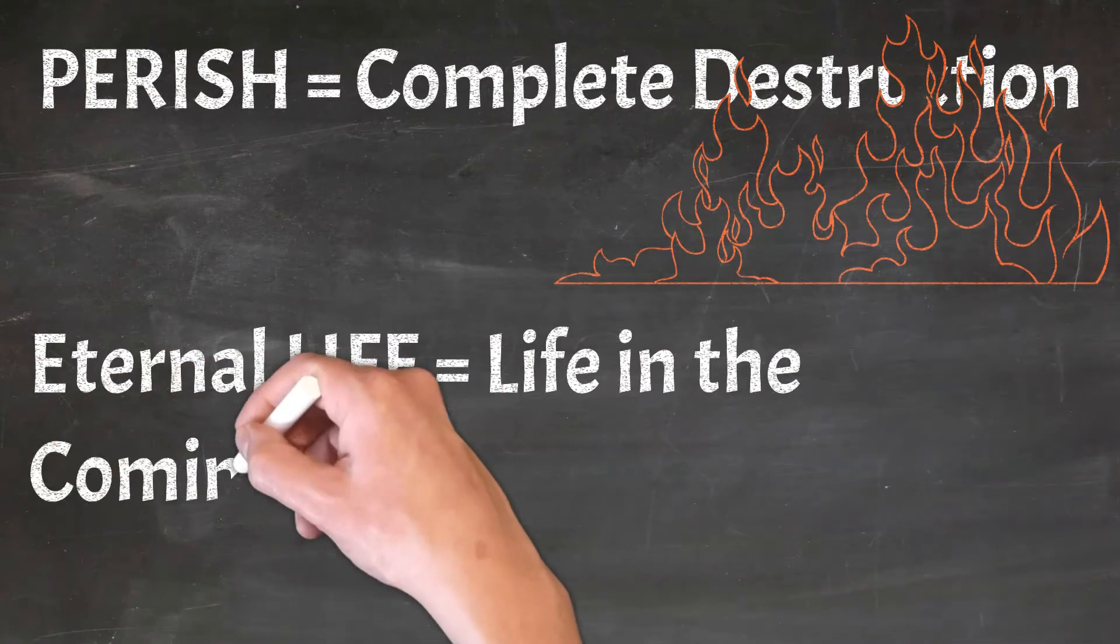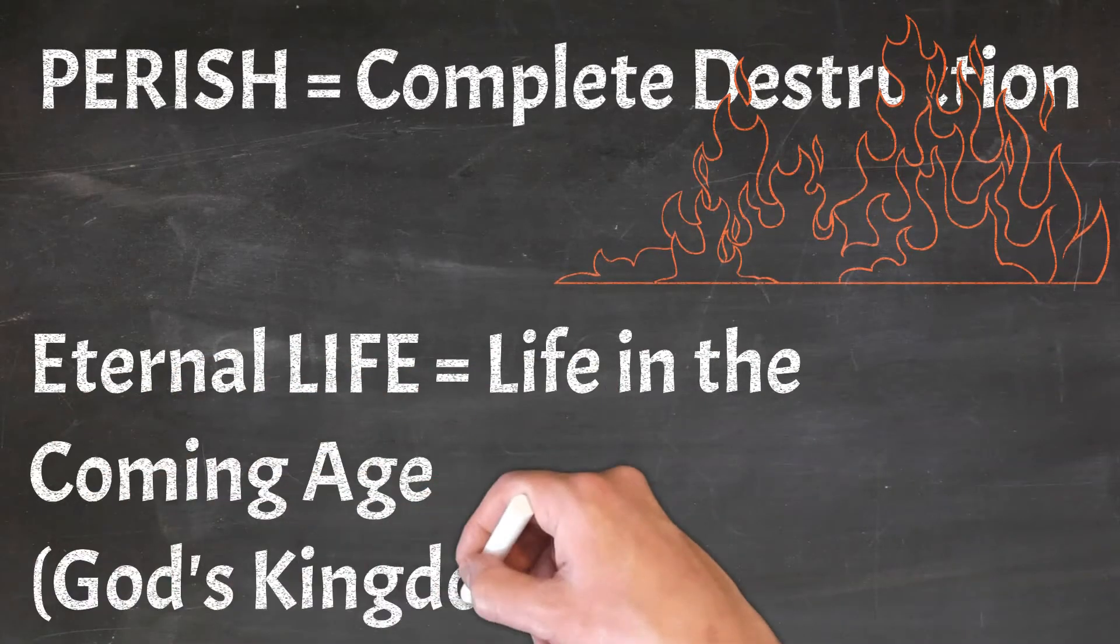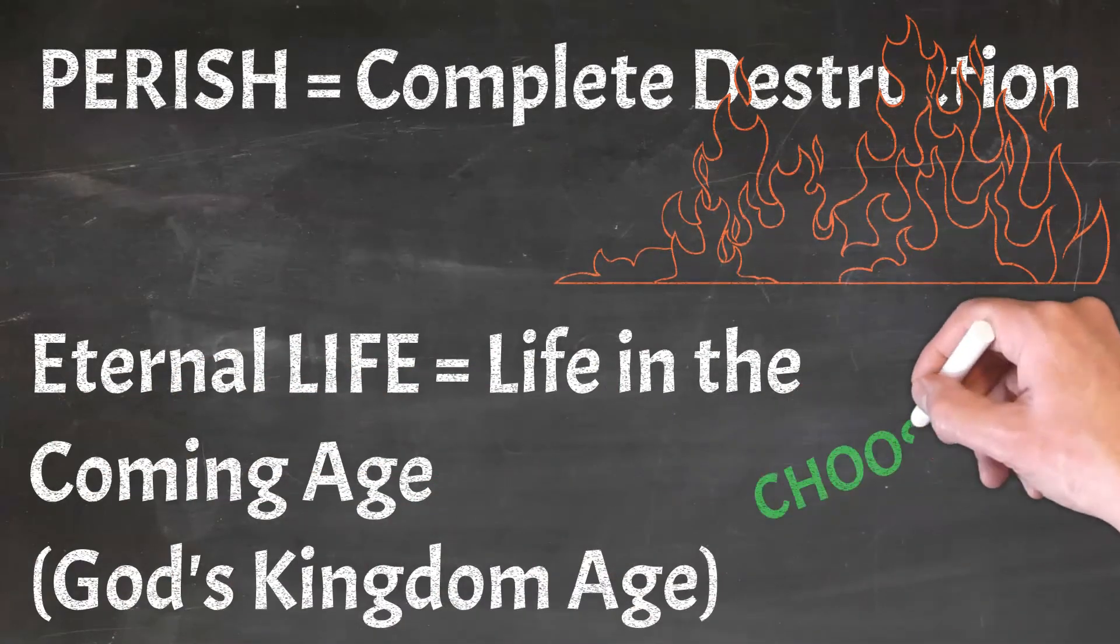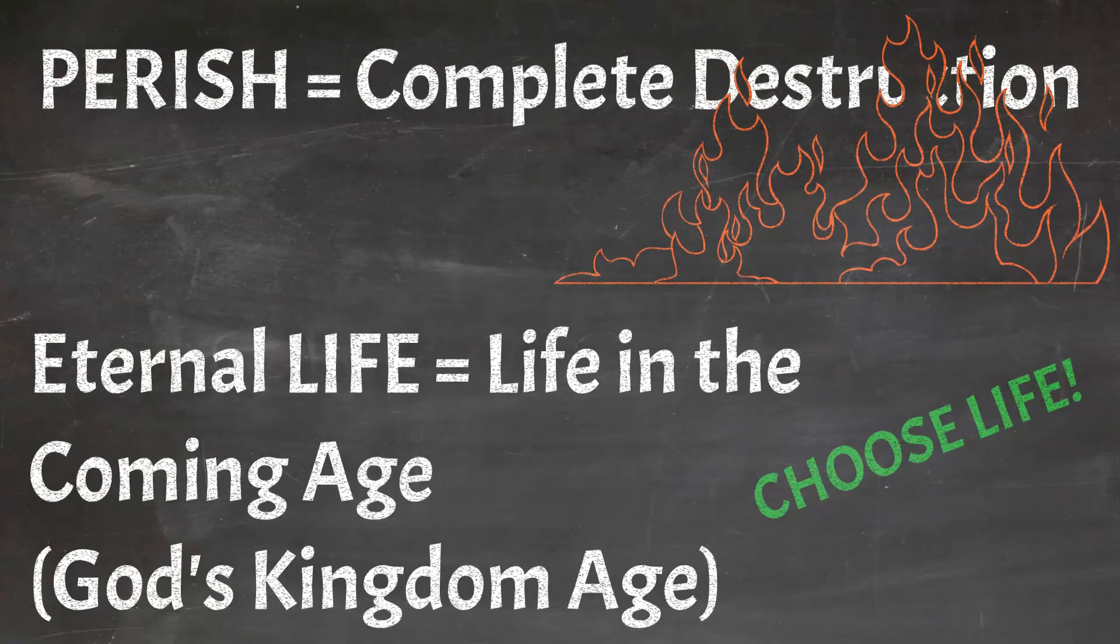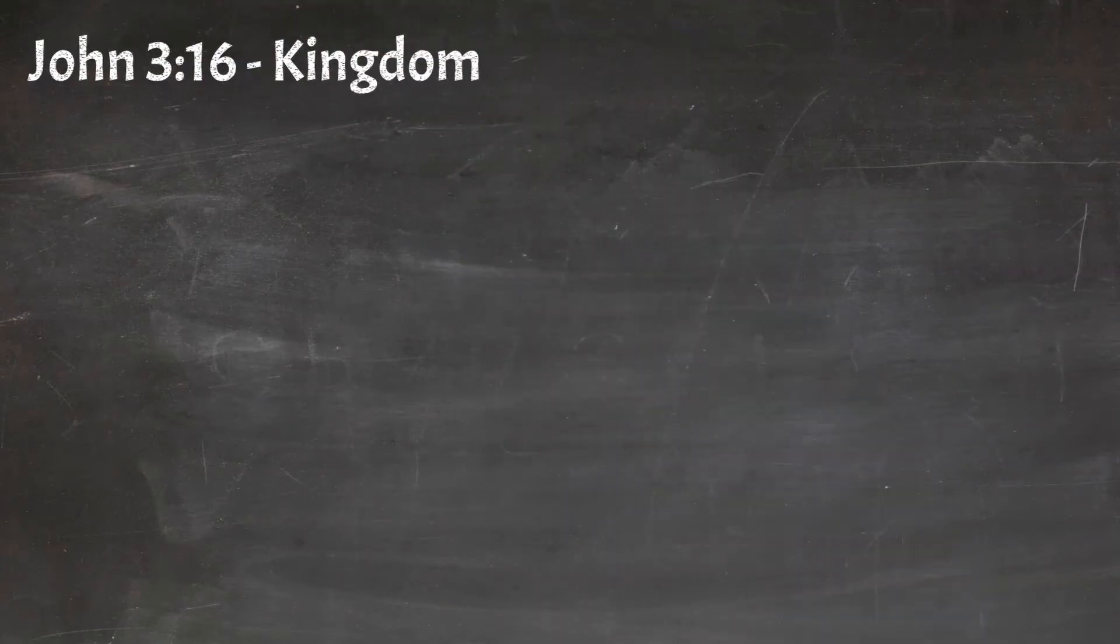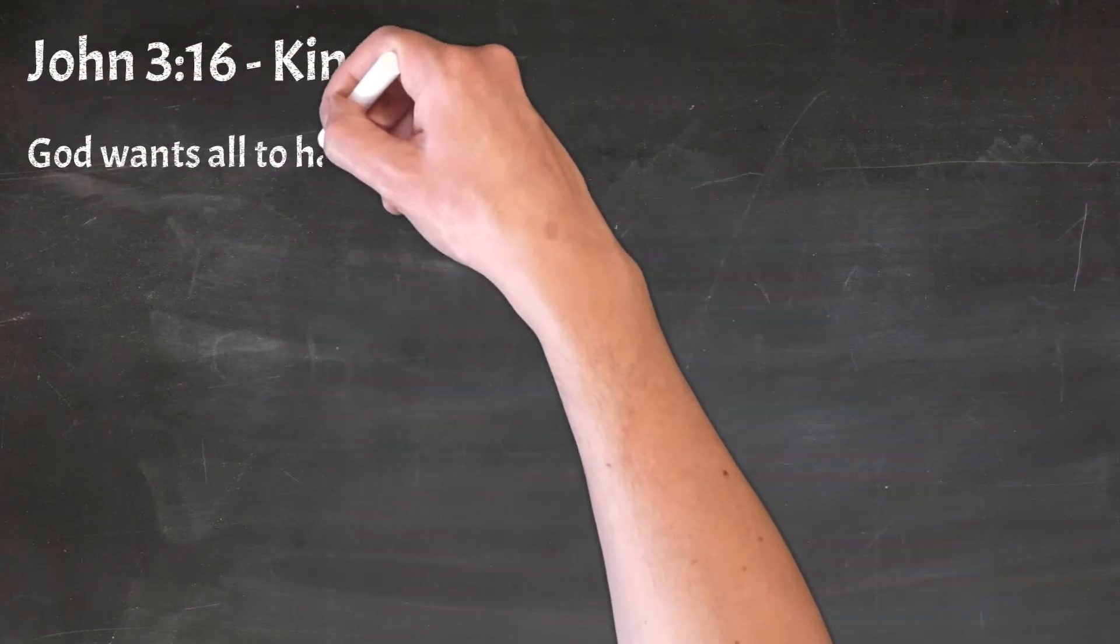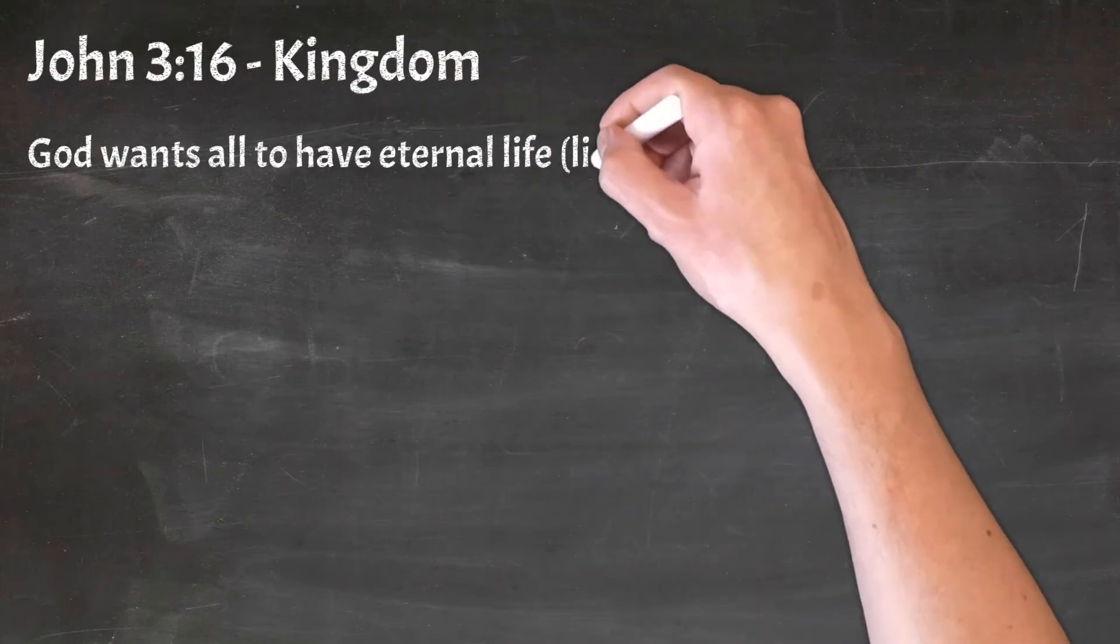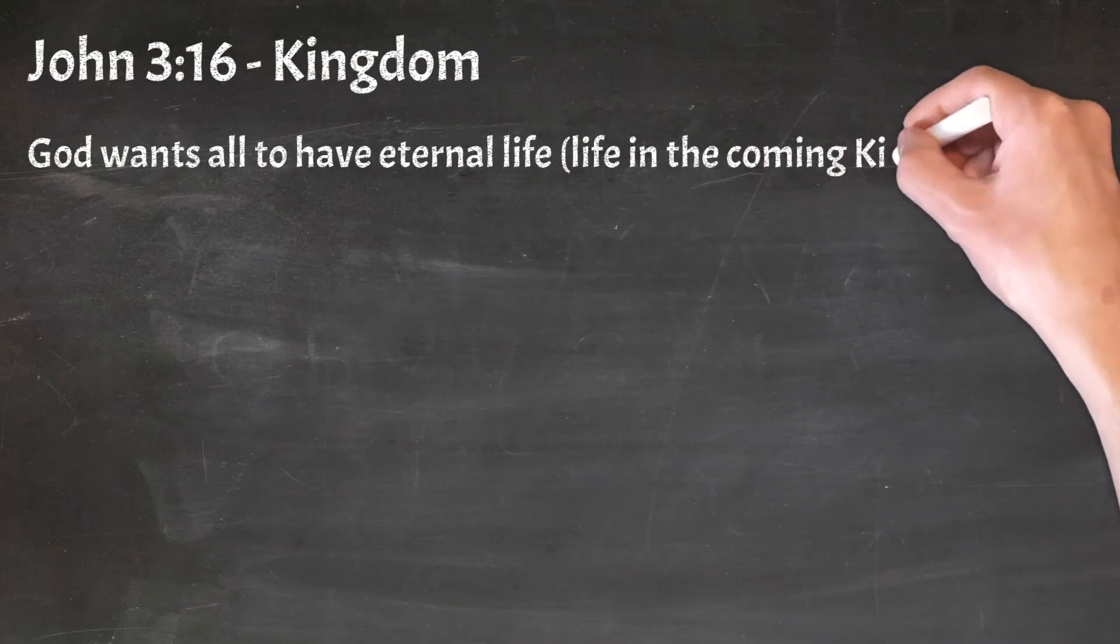Eternal life means life in the coming age, God's kingdom age. God hopes that you will choose life. God wants all to have eternal life. That means to have life in the coming kingdom age when Jesus returns.